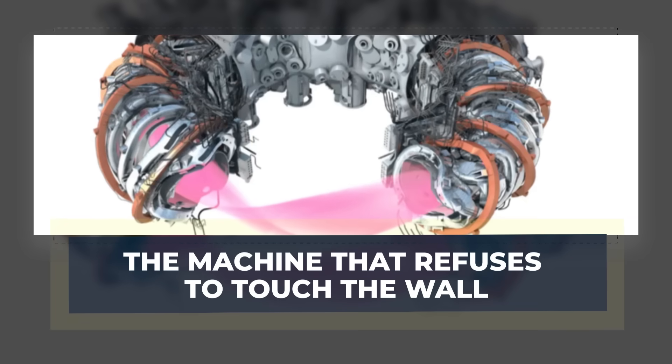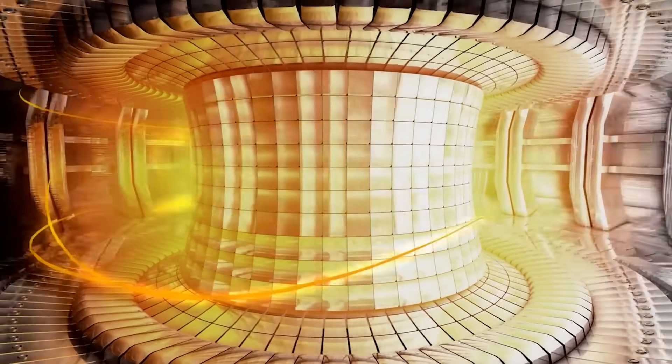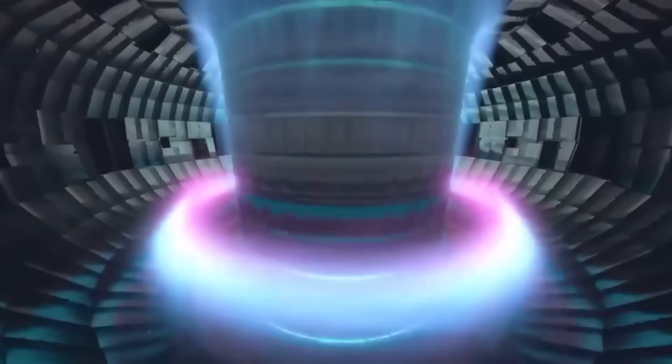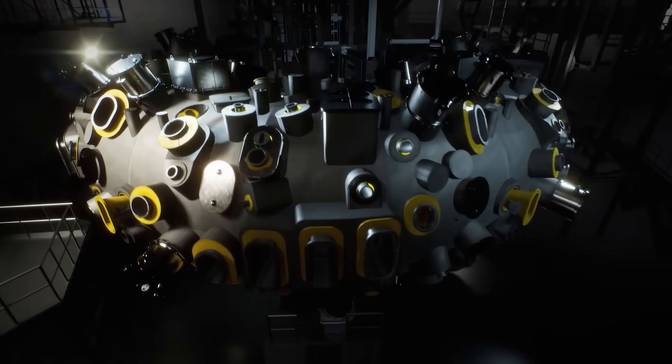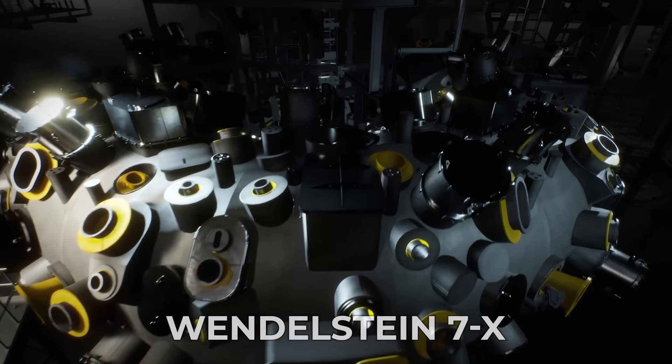The machine that refuses to touch the wall. Fusion fails the moment plasma hits a solid surface. Plasma at tens of millions of degrees would melt steel like paper. So Wendelstein 7X does something clever. It never lets the plasma touch the wall at all.